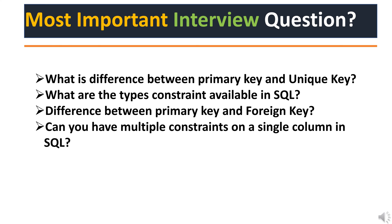Before we dive into crucial interview questions, please like, subscribe, and share our channel. Now, the first interview question: what sets the primary key and unique key apart? Primary key serves as a unique identifier for records and strictly prohibits null values. A unique key also ensures uniqueness but allows a single null value. Giving the wrong answer here might not leave a good impression on your interviewer.